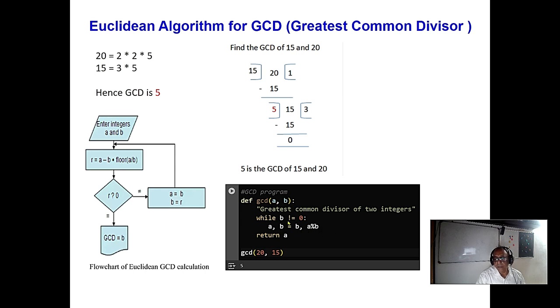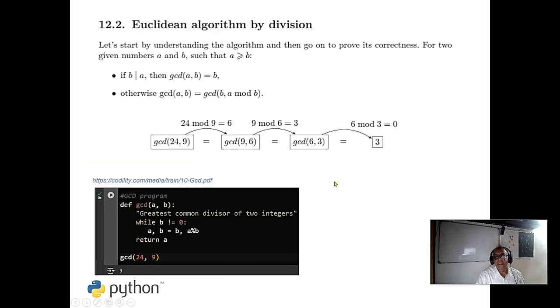This is until and unless B equal to 0. And here you calculate GCD 20, 50 is 5. So this is the simplest program in GCD in Python which implements this program.